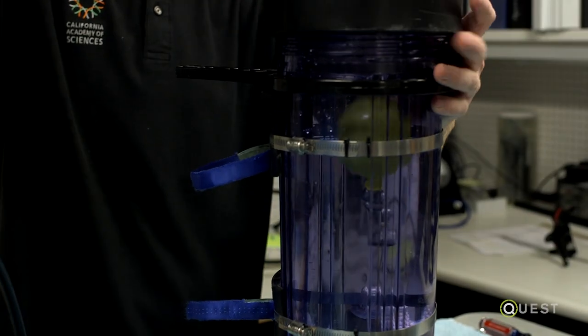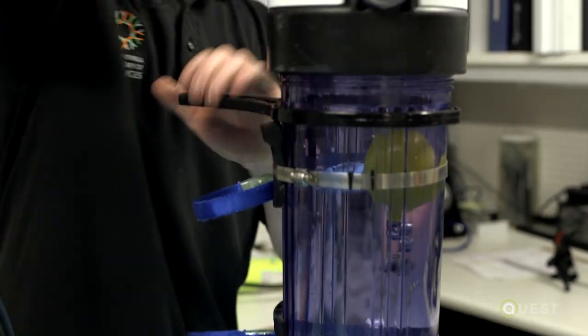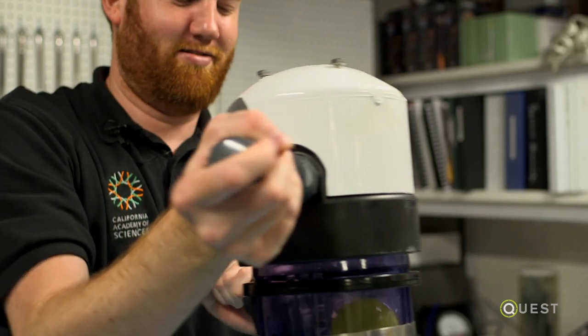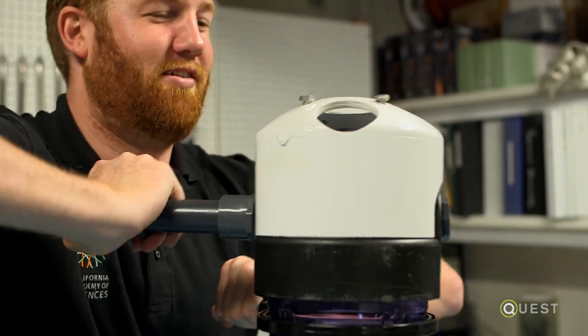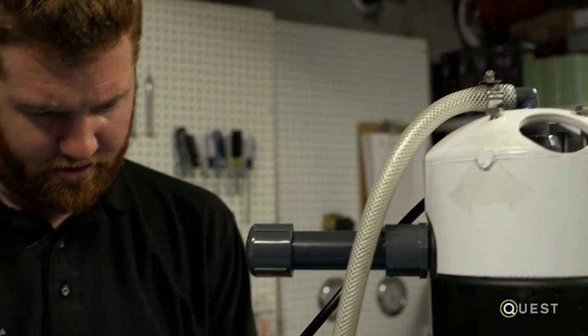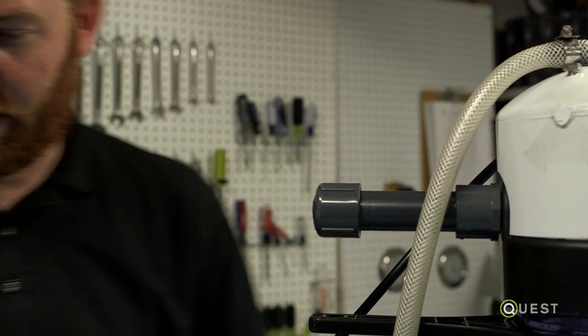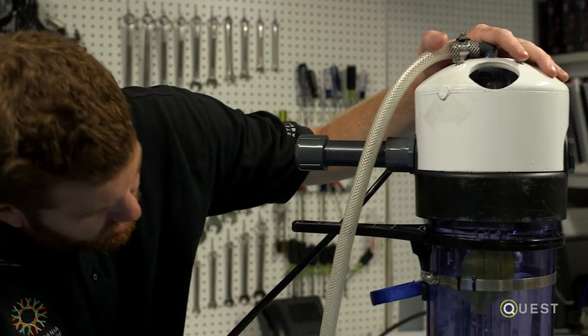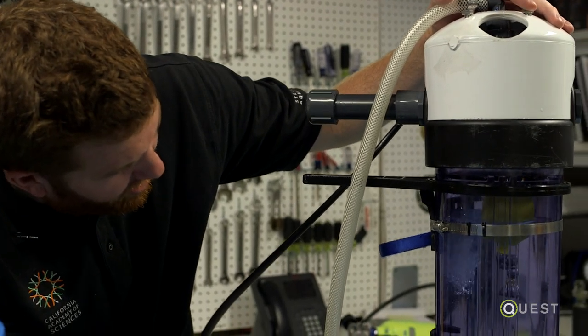So screw this on and we seal it up so that we can increase the pressure. Make sure it's nice and tight. Got everything all connected now, so I'm going to flip on the pump, shut our bleed valve, and you can see water going in right now.